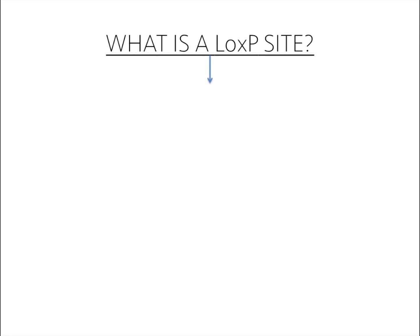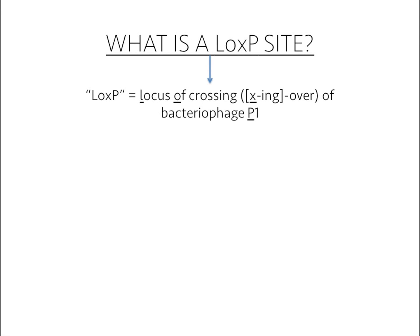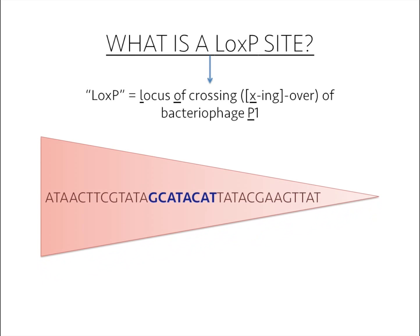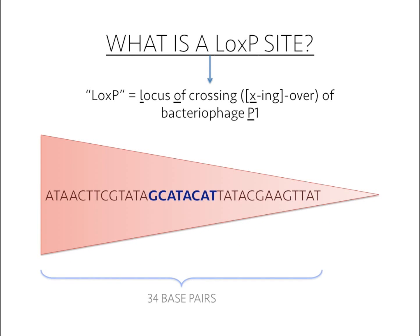LoxP is short for locus of crossing over of bacteriophage P1. LoxP is a 34 base pair DNA recognition site to which Cre recombinase catalyzes homologous recombination.